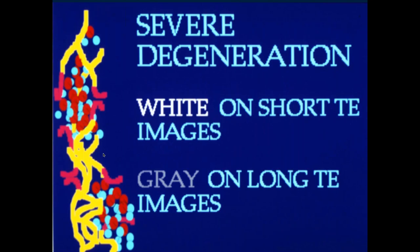When it becomes more severe, you start getting frank collection of fluid. The water in these areas is more mobile, which means the T2 time is longer. So when you get pockets of fluid collecting among the collagen fibers, you start getting increased signal intensity on both the short TE and the long TE images.